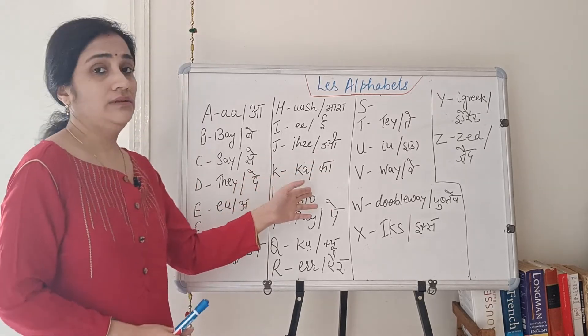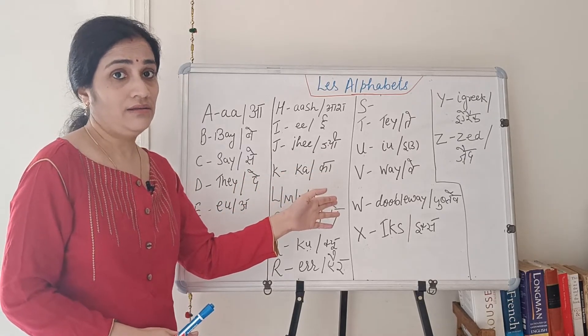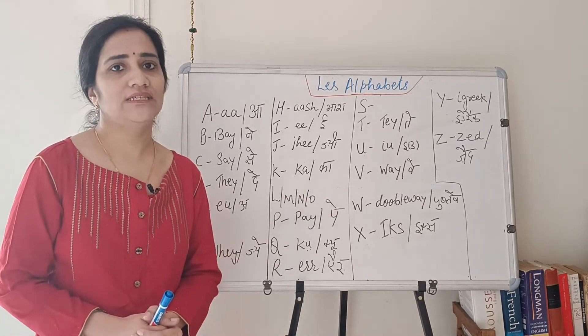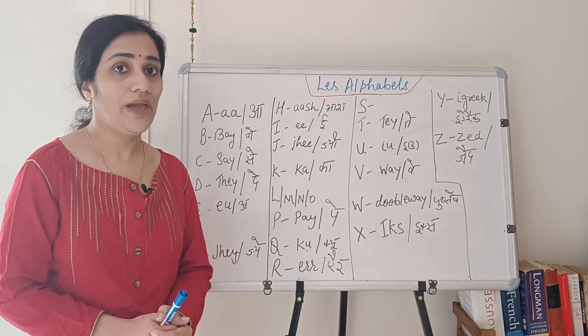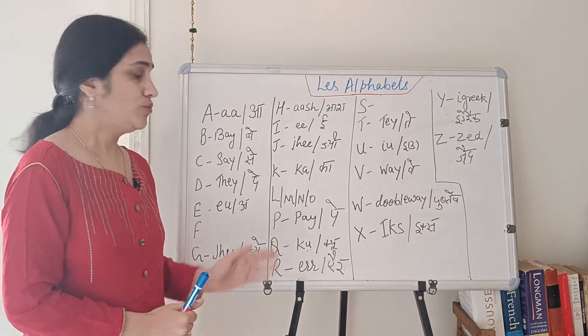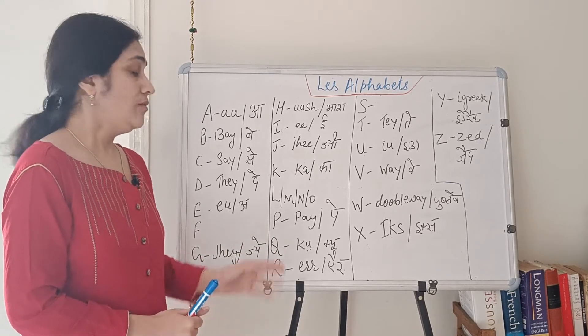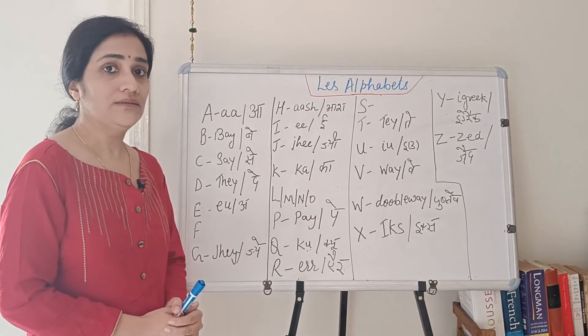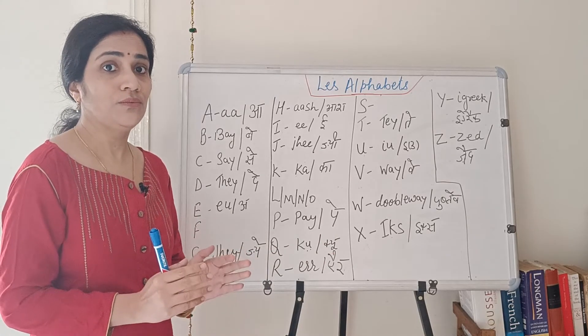Now the K sound is Ka. Now L, M and N, same sound as we have in English. L, M and N. Now the next letter is P. So P sounds like P. Now the Q is Q.